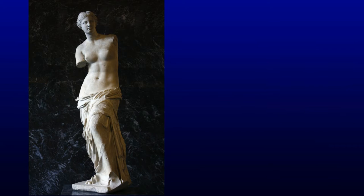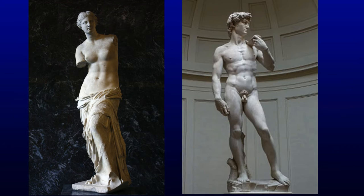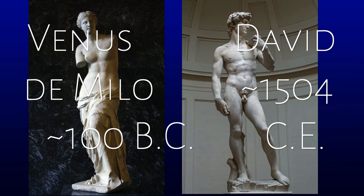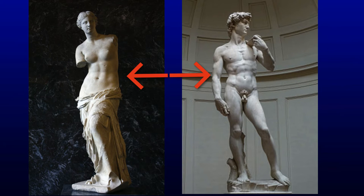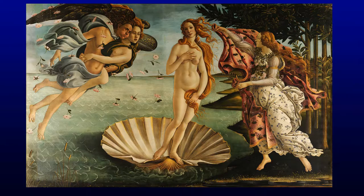Ancient Greeks and Romans loved to depict the ideal human body form. Here's the Venus de Milo on the left, a Greek marble sculpture that portrays the ideal Greek woman. Contrast that with Michelangelo's David from the Renaissance. These two were sculpted nearly 1,600 years apart, but due to their proportions and stance, look like they could have been created at the same time, representing the ideal Greek woman and man standing next to each other.